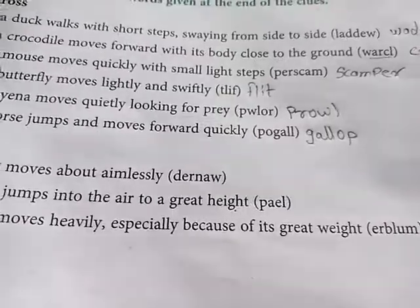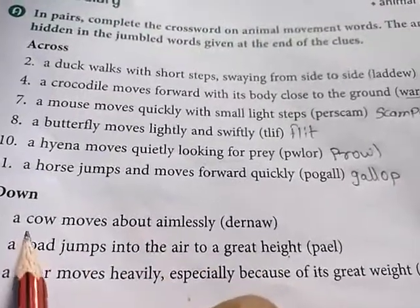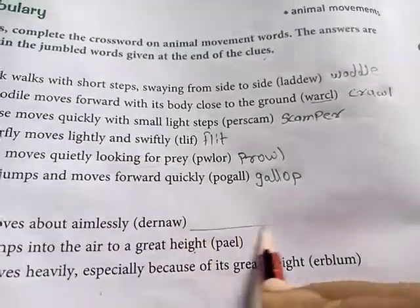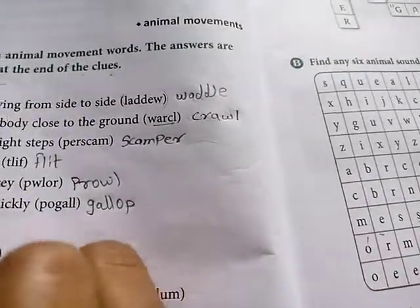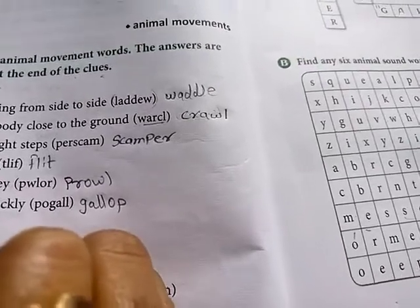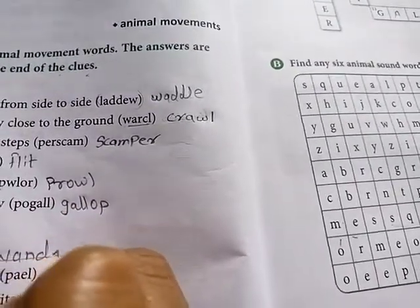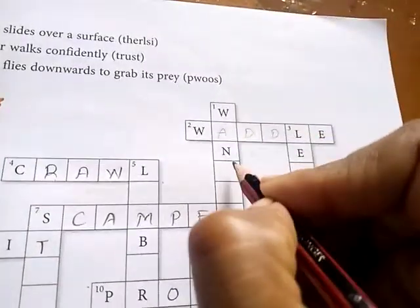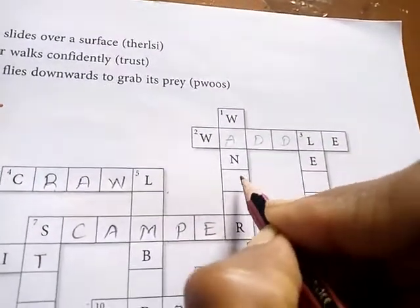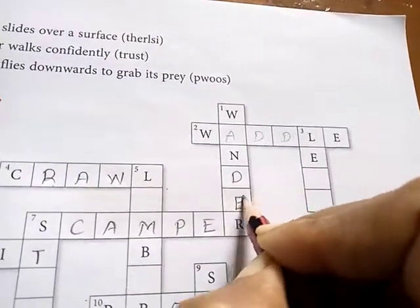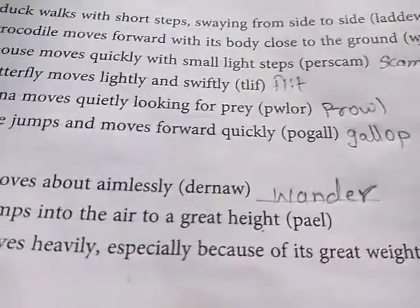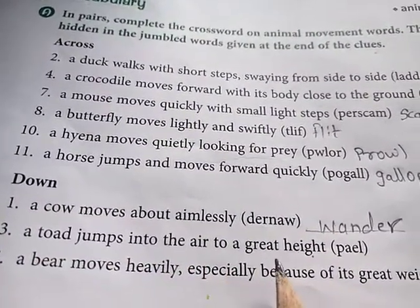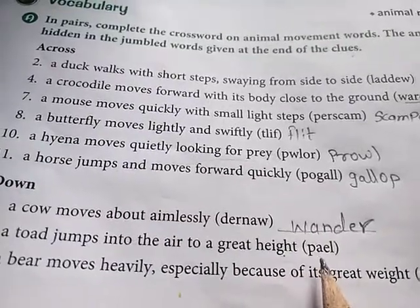Now let us do the down words. First down: a cow moves about aimlessly — that is called 'wander', spelled W-A-N-D-E-R.